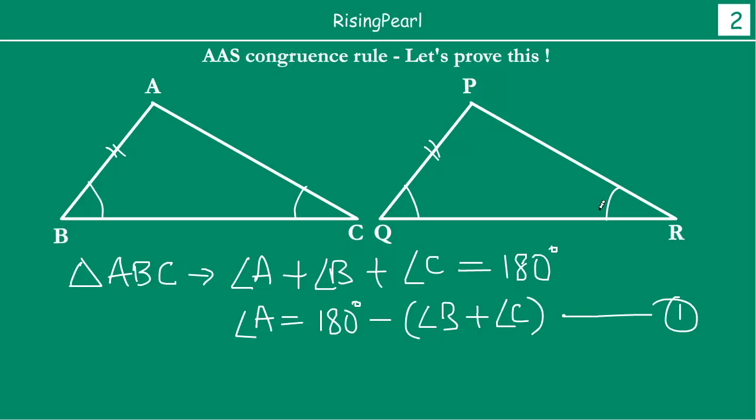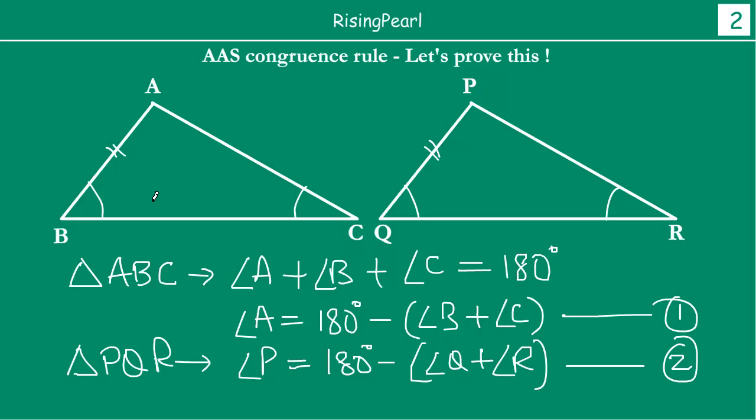So similarly, in triangle PQR, angle P we can write as 180 degrees minus angle Q minus angle R. This is our condition 2. Now, if B is equal to Q, we are given that angle B is equal to angle Q and angle C is equal to angle R. That means angle A is equal to angle P, right?